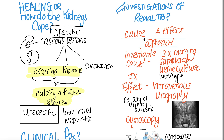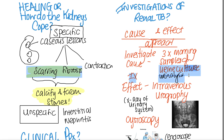What are the investigations? We can either investigate the cause or investigate the effect — this applies to all medical diseases. If we investigate the cause, we investigate the urine culture specifically. On urine culture, you might get acid-fast bacilli. You use a specific acid-fast stain, which is the Ziehl-Neelsen stain, and you always take three samples in the morning.